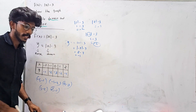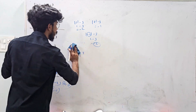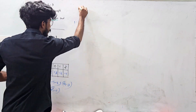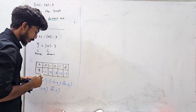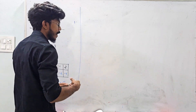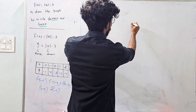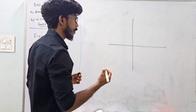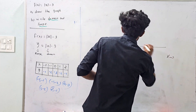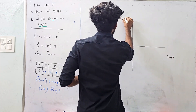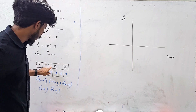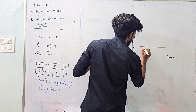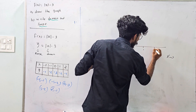To draw the graph, you take the x-axis and y-axis. x goes from minus 2, minus 1, 0, 1, 2 on the x-axis.